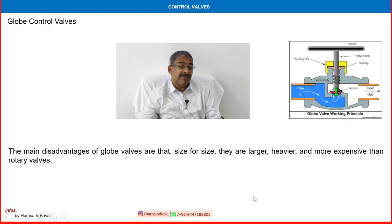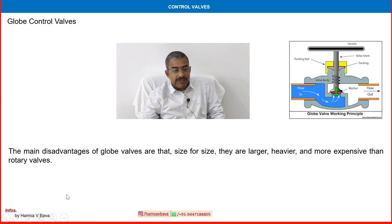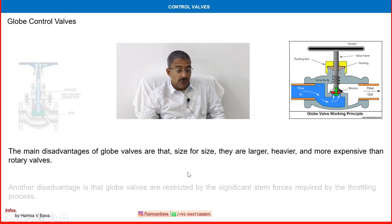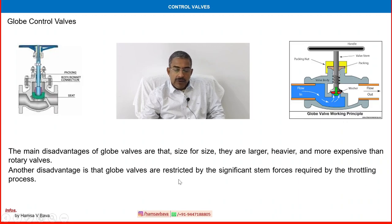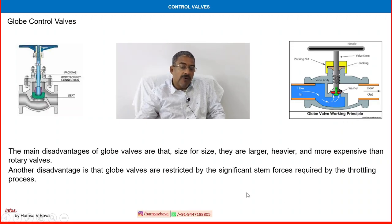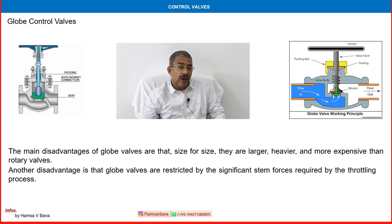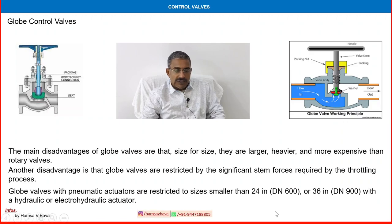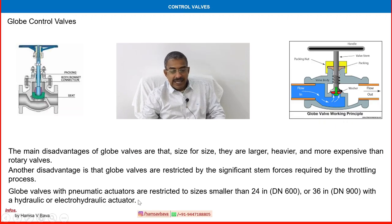The main disadvantages of globe valves: size for size, they are larger, heavier, and more expensive than rotary valves. Another disadvantage is that globe valves are restricted by the significant stem forces required for throttling. The actuator system must be carefully designed to provide that significant force from the top. Globe valves with pneumatic actuators are restricted to sizes smaller than 24 inch, or 36 inch with hydraulic or electro-hydraulic actuators. That is the limitation for globe valves.